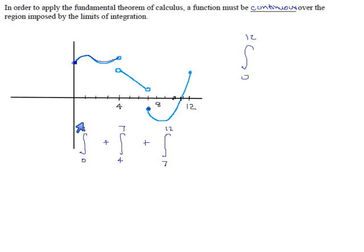So if you can't go from 0 to 12 in one smooth flow, then no problem, as long as there's a finite number of integrable pieces, you can do them separately and then just work out a total at the end.